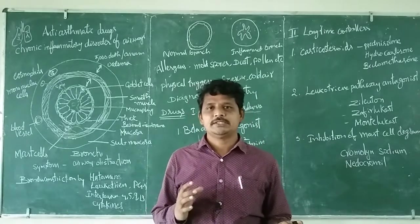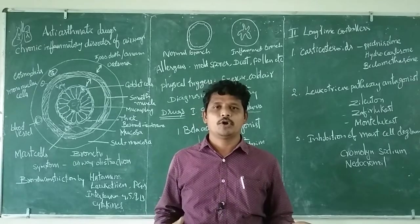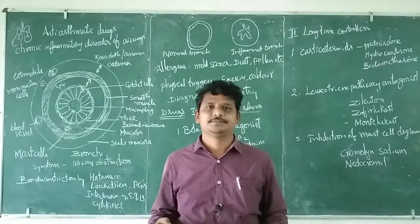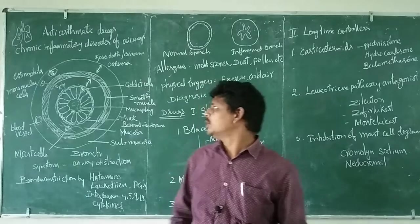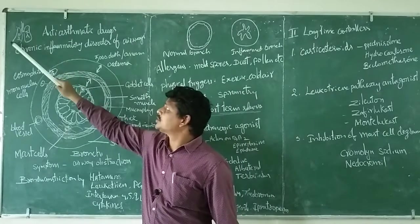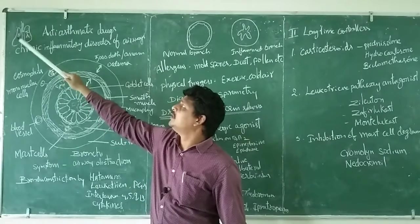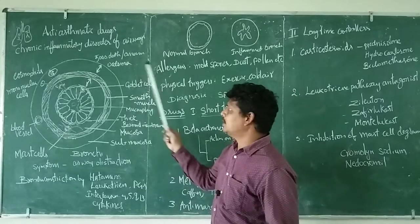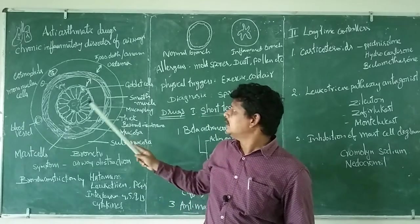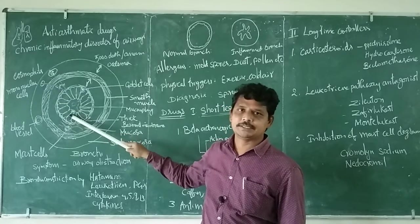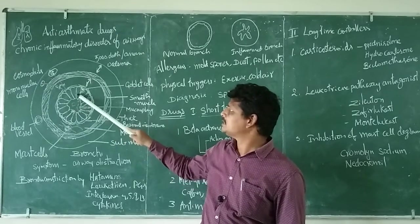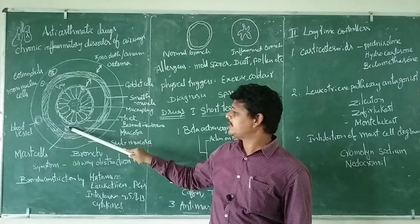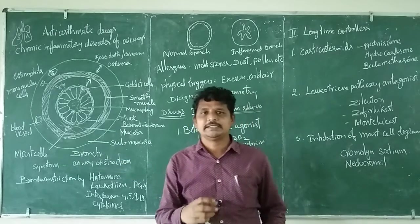Asthma is a chronic inflammatory disorder of the bronchi. First, let's see what is there in the bronchi and how different agents are responsible for constriction. This is the basic structure of the lung with trachea and bronchi. In the cross-section, this is the area where air passes. These are epithelial cells with goblet cells, and this is the mucus layer consisting of mast cells in which histamine is present in granule form.